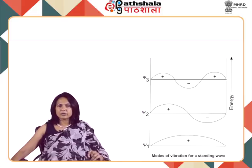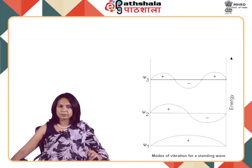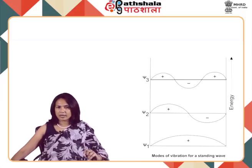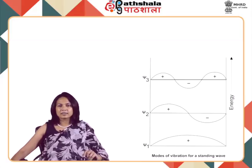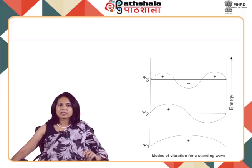Here a change in phase of the wave occurs as it passes through the node, goes to the minimum, and then comes back to 0. For psi-3, there are two nodes and the phase of the wave changes twice.